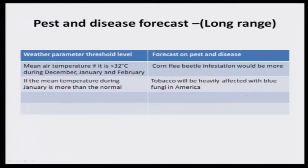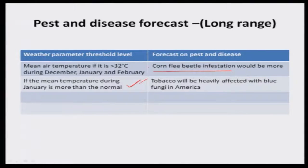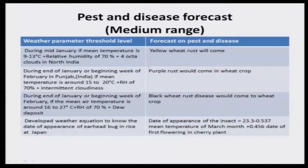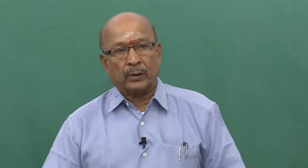There are also persistent disease forecasts for long range, published in many books. If mean air temperature is greater than 30 degrees centigrade during December, January, and February, cornflip beetle infestation in maize will be more. In some countries, tobacco is heavily affected with blue fungi under similar conditions. For India, yellow wheat rust, purple rust, and black wheat rust will occur when these specific environmental conditions are observed. These are all thumb rules that can be used effectively.